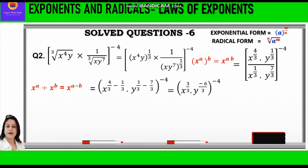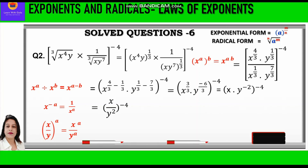Now 3 and 3 cancel, giving x raised to power 1, and minus 6 upon 3 is minus 2, so we write y raised to power minus 2, and the whole raised to power minus 4. We have a negative exponent, y raised to power minus 2. Applying the law of negative exponents — x raised to power minus a equals 1 upon x raised to power a — we reciprocate the base and write x upon y squared, and the whole raised to power minus 4.